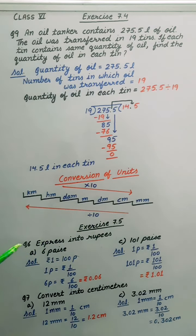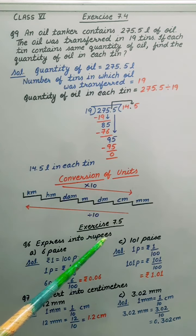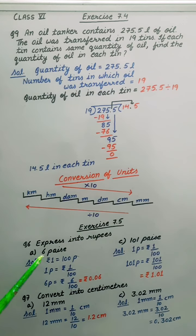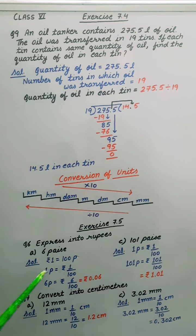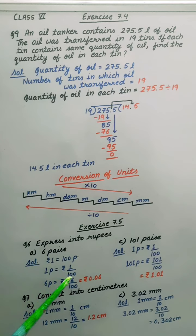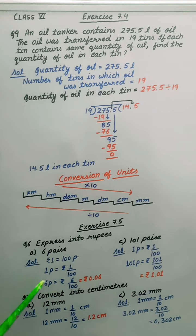Let's begin question number 6. Express into rupees. First one, 6 paise. This we have to convert in rupees. We know 1 rupee is equal to 100 paise. So 1 paise will be equal to rupees 1 by 100. So 6 paise will be equal to 6 upon 100.